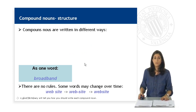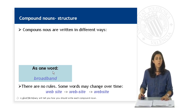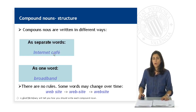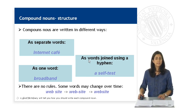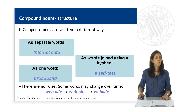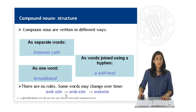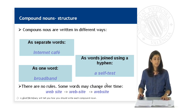Regarding their structure, compound nouns are written in different ways. They can be written as one word, like in the example 'broadband.' They can be written as separate words, as in 'internet cafe.' Or as hyphenated words, like in 'self-test.' However, there are no rules. Some words also may change over time, as in the example 'website,' which was originally written separated, but then it evolved to a hyphenated word and finally it remained unspaced.